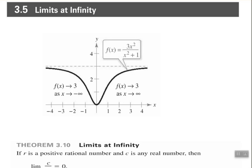As you can see from the graph that we have here, we have f of x — the function f of x equals 3x squared over x squared plus 1. So we have a horizontal asymptote. The limit of the function as x approaches infinity is 3. The farther we go out on the x-axis, this thing is closer and closer to 3. As x approaches negative infinity, we see that f of x still approaches 3.